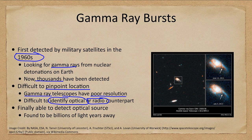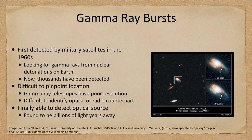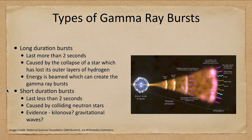We have now been able to identify optical sources for some of these, and many of them are billions of light years away — so these are not anything nearby us that we are detecting. When we look at gamma ray bursts, we split them into two groups: there are long duration and short duration bursts.